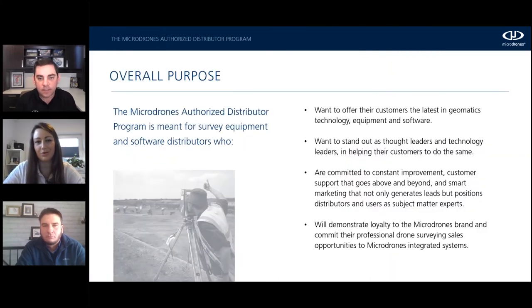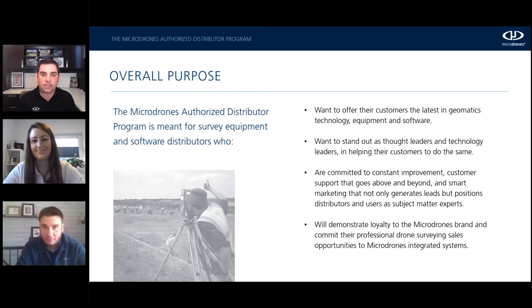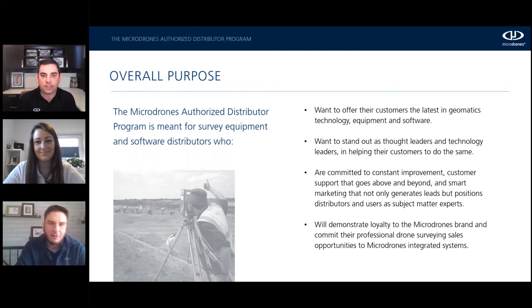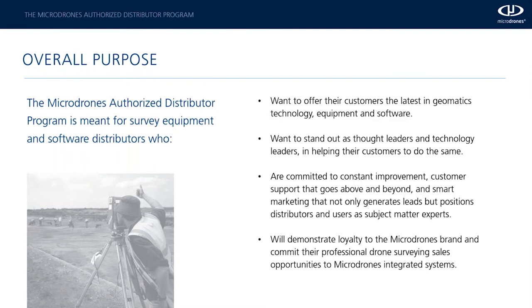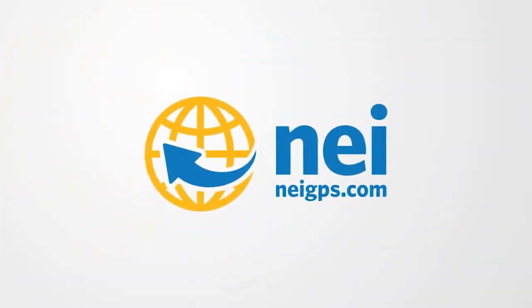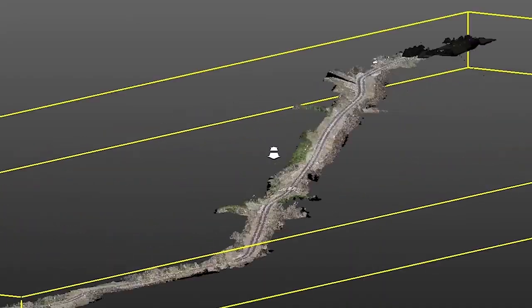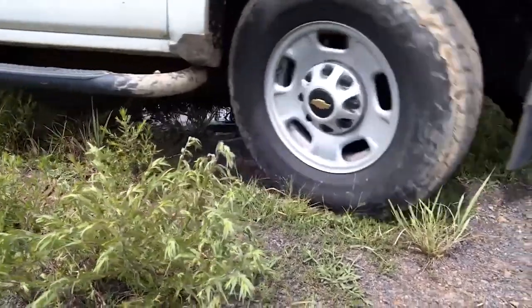Let's start by explaining the overall purpose of this program. The Microdrones Authorized Distributor Program is for customers that want to offer their surveyors and end users the latest in geomatics technology, equipment, and software. Typically it's distributors that want to stand out as thought leaders, deploying technology in more efficient ways, and showcase best practices showing how their customers are deploying this technology in the field to do things more efficiently, with a higher degree of precision, accuracy, and ease of use and safety.